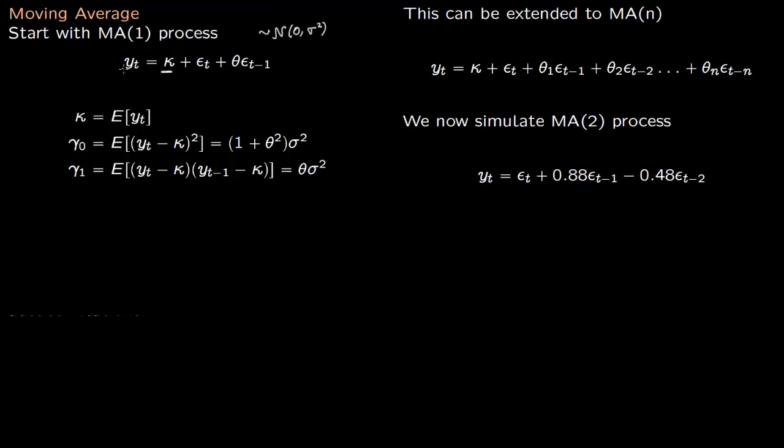So if you take expectation of this you will get kappa. Gamma_0 is just the variance. It comes out to (1 + theta squared) sigma squared, and gamma_1 is the covariance with lag 1. Now gamma_2 and gamma_3 and gamma_4, all of them are 0. So you can calculate this covariance. I have explained how to calculate these expectations in my lectures on probability.